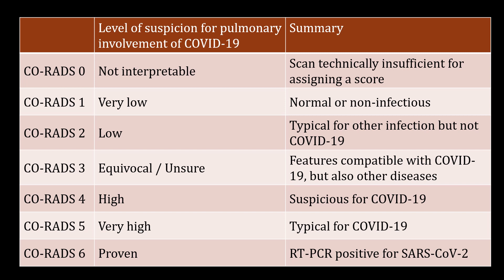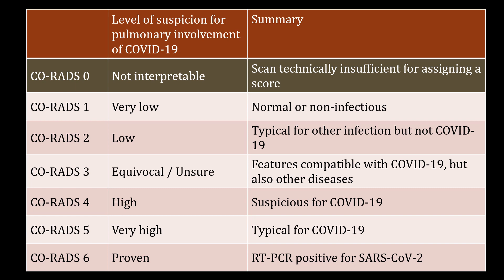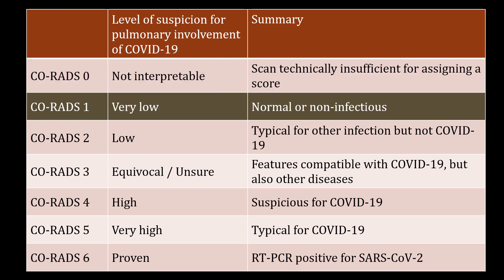This chart shows all the categories along with the levels of suspicion and additional information. CORADS-0 is chosen if none of the five categories can be assigned because of scans that are incomplete or of insufficient quality, for example because of severe artifacts due to coughing or breathing. CORADS-1 implies a very low level of suspicion for pulmonary involvement by COVID-19, based on either a normal CT or CT findings of unequivocal non-infectious etiology such as emphysema, peripheral nodules, lung tumors, or fibrosis.